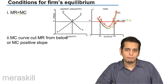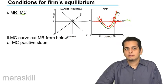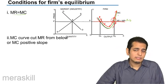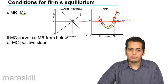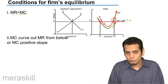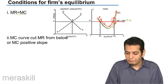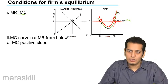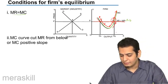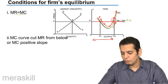So my equilibrium point would be point B, where both conditions are getting satisfied. Otherwise I would have had two equilibrium quantities — OQ1 or OQ2. But now I know that at point B both conditions are satisfied, so the equilibrium point is B and the equilibrium quantity is OQ2.